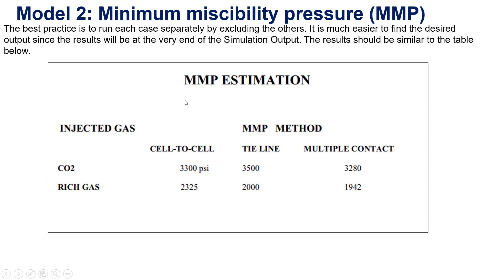I will include a step-by-step guide in the PDF file for this model for you to follow, just in case you cannot perform it by yourself. You can follow step-by-step and adapt it for your own data. That is all about model number 2 — minimum miscibility pressure. It is very important for enhanced oil recovery. I suggest you look at this model very carefully if you have an interest in carbon dioxide enhanced oil recovery for your field data. This tutorial can be applied for any version of CMG — you don't need to worry about the software version.